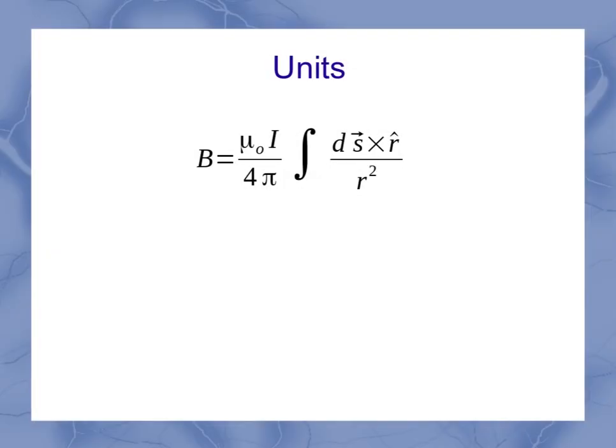Now let's take a look at the equation from the standpoint of units. Well, we said our mu naught had a constant of Tesla meter per amp. Current, we know, has units of amps. 4 pi doesn't have any units. The ds part of our integral has units of meters, while the r squared part has meters squared.